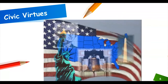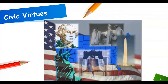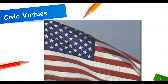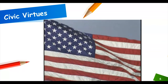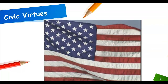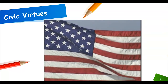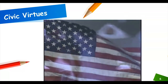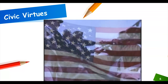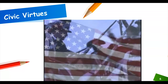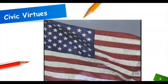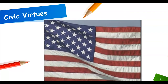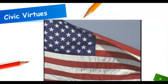Symbols of American values are all around us. This is the American flag, one of the best-known symbols of our country. The 50 stars on the flag represent the 50 states, and the 13 stripes represent the 13 original colonies. The flag reminds us of the freedoms and rights guaranteed in the U.S. Constitution and its Bill of Rights.